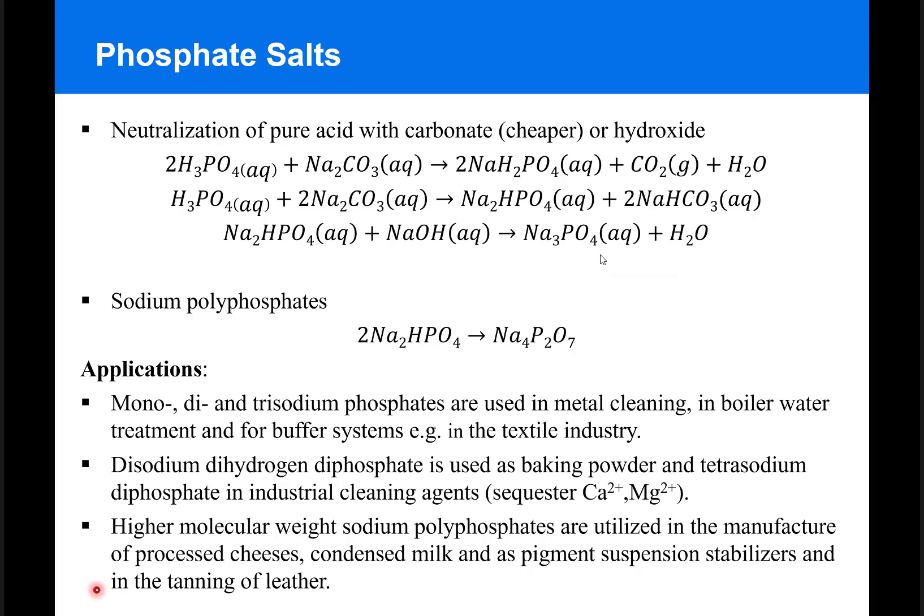Other phosphate-based industries focus on the production of phosphate salts for different purposes, and most of these salts can be produced through neutralization of pure acid with carbonate or hydroxide.